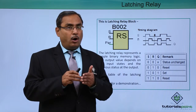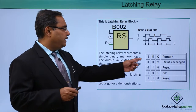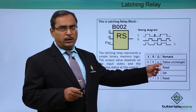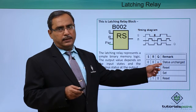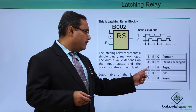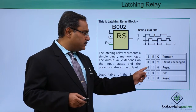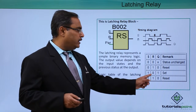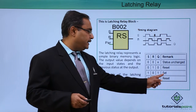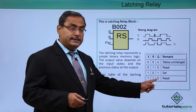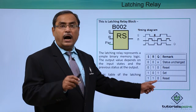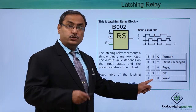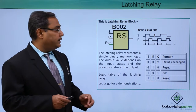That non-deterministic output has been resolved here. If S and R are both 00, the output is status unchanged — the previous output will prevail. For 01, reset is enabled and set is not enabled, so the output is reset to 0. In case of 10, set is enabled and reset is not enabled, so the output becomes 1. For 11, reset has higher priority than set, so reset is enabled and the output becomes 0.